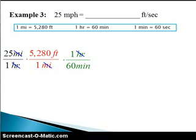Lastly, we need to cancel the minutes that are on the bottom, so we need to use a unit ratio that has minutes on the top. So we need to put one minute on the top and 60 seconds on the bottom. We cross cancel the minutes and notice that the only units that are left are feet on top and seconds on the bottom.